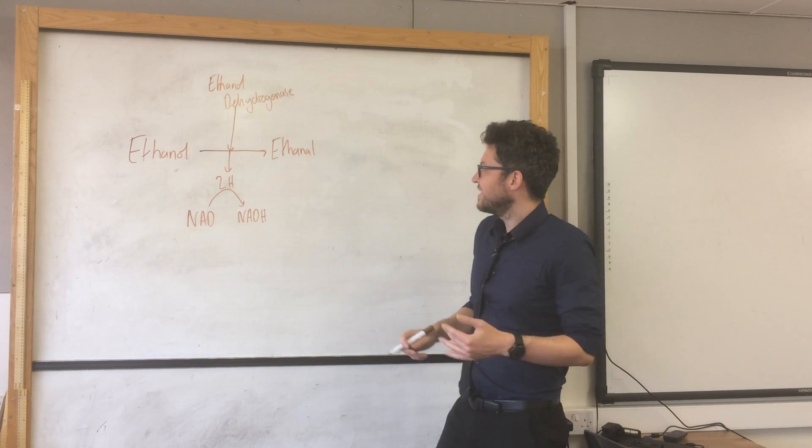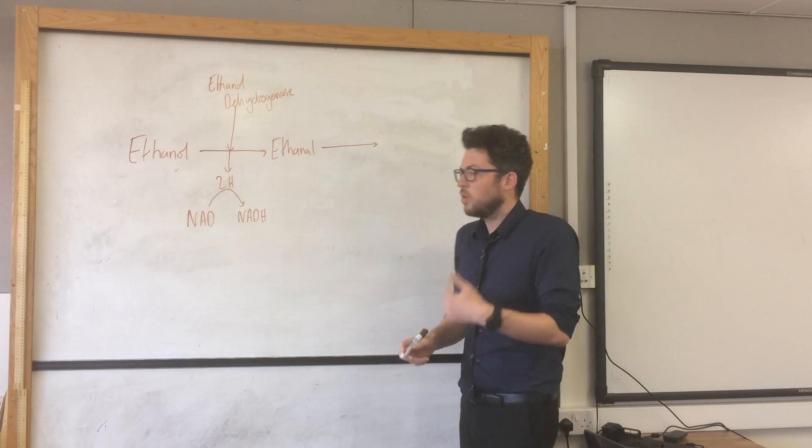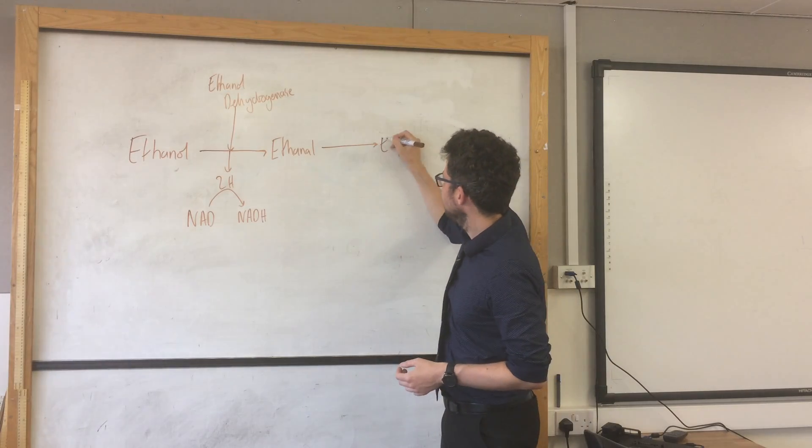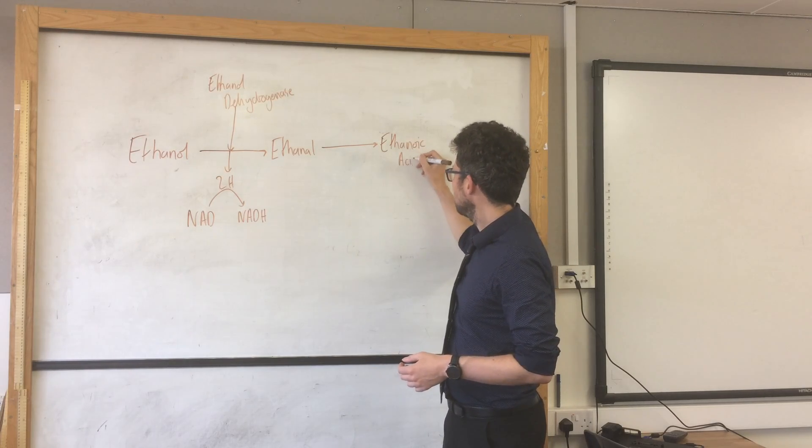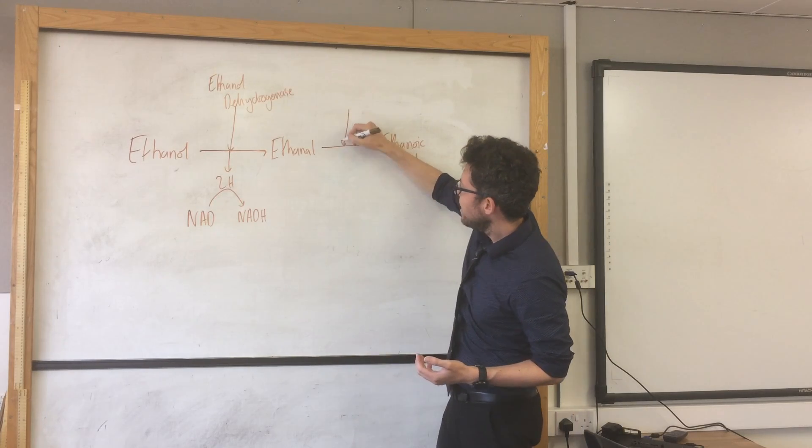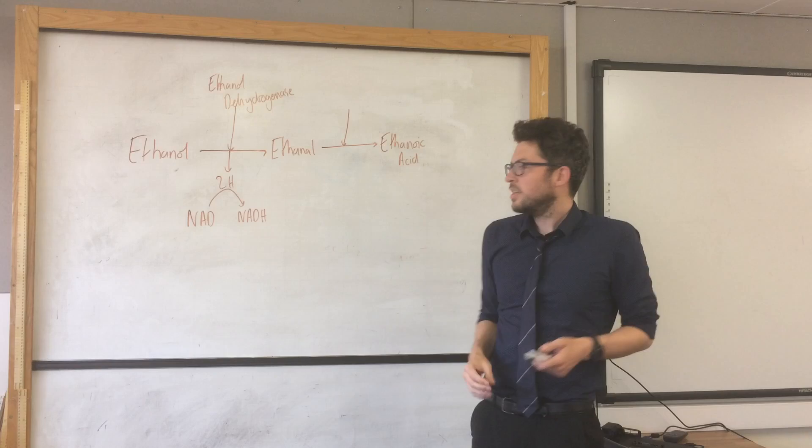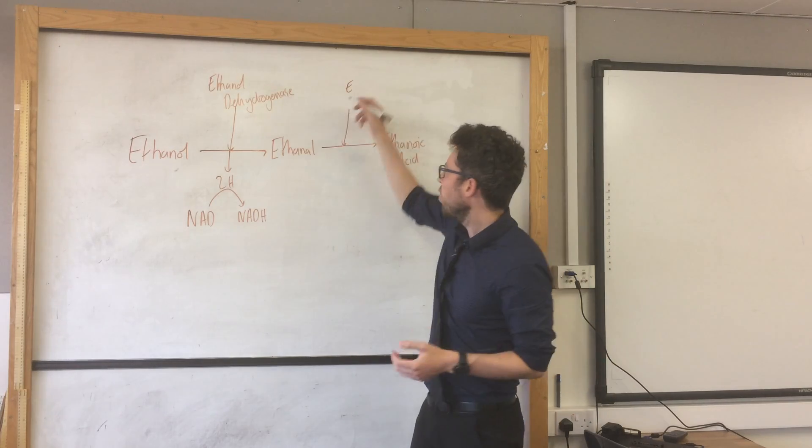So the next step is ethanal being converted into another molecule called ethanoic acid. And again we have another enzyme working in this process and this enzyme predictably is called ethanal dehydrogenase.